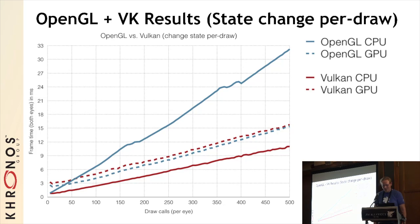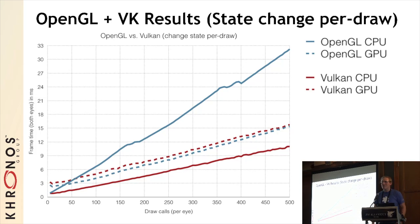I thought I'd have to work much harder to beat OpenGL, but with almost no cleverness at all, the Vulkan version of the scene takes about a third of the CPU time. And the test is entirely GPU bound over this entire range of draw calls. This is the worst case imaginable for an API where you're changing state constantly and not reusing anything.